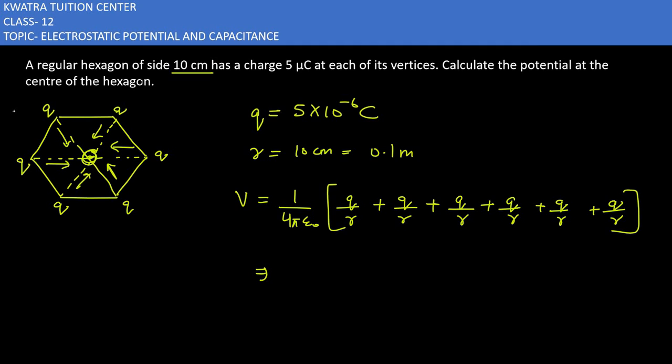How many times q/r? Six times q/r. So we take 6 out, and now we substitute values. The 6 and 4 cancel because 1/(4πε₀) equals 9 × 10^9, q is 5 microcoulomb which is 5 × 10^-6, and r is 0.1.